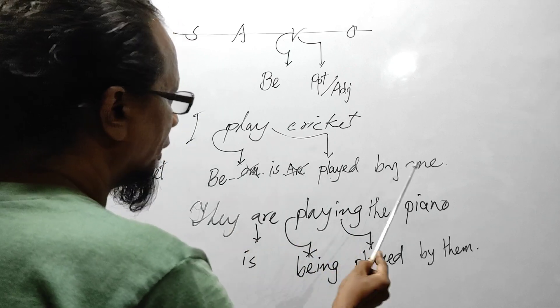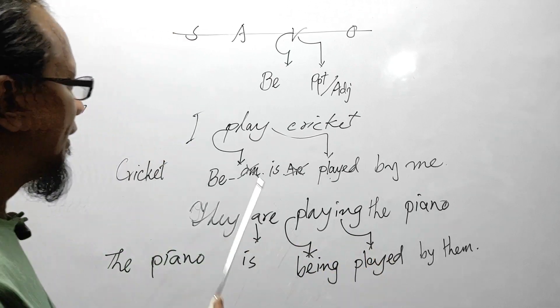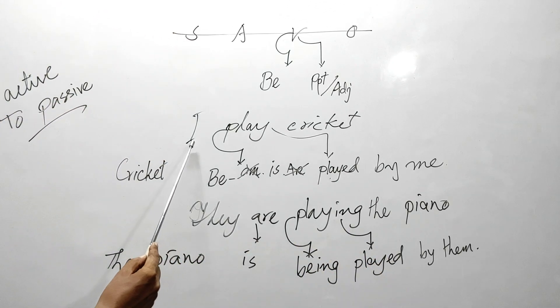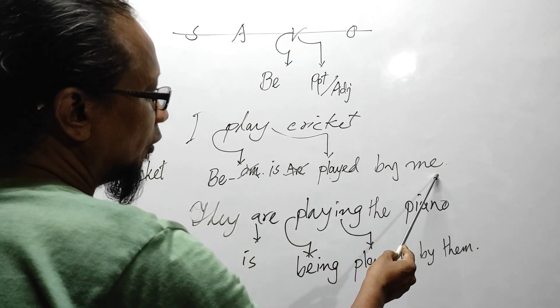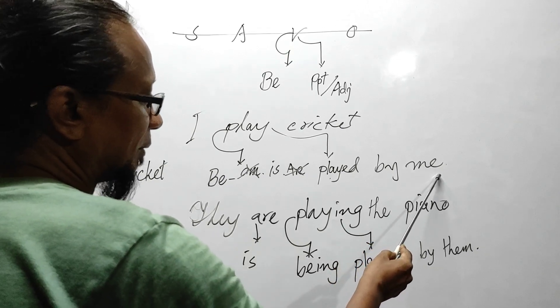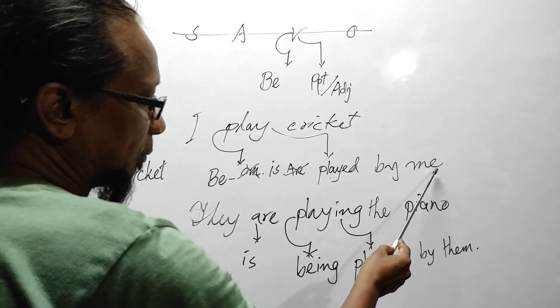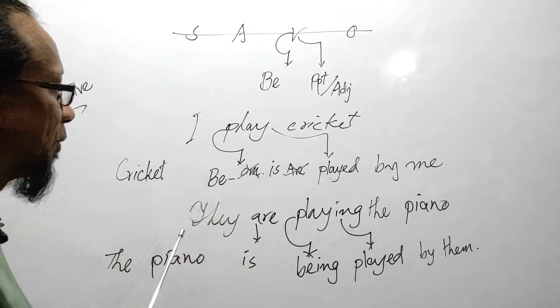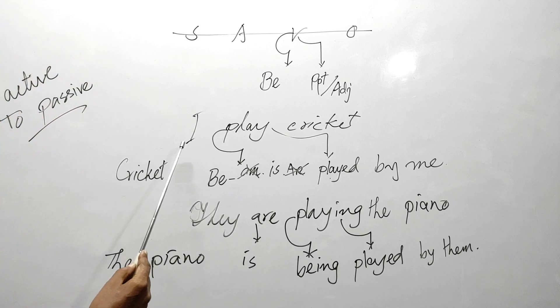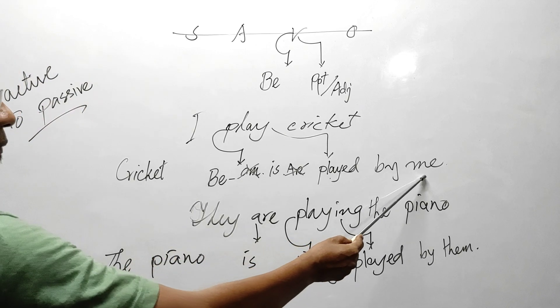The principal verb is turned into an adjective — past participle. 'Cricket is played by me.' The nominative subject 'I' is turned into the objective pronoun 'me' here. That means nominative becomes objective.